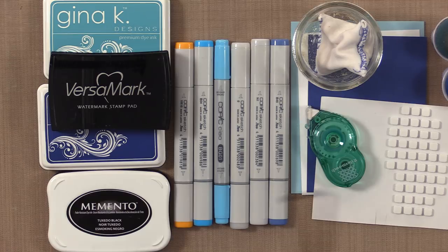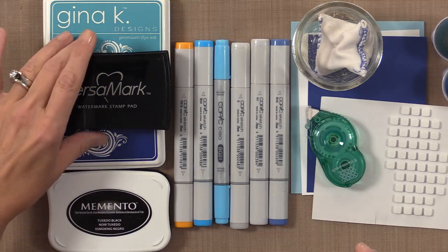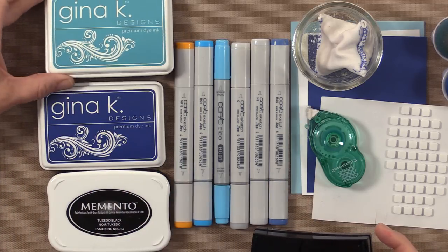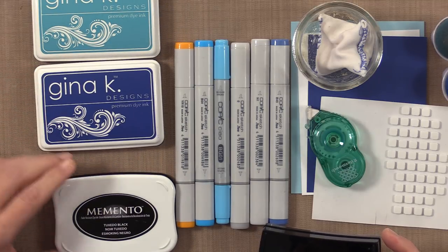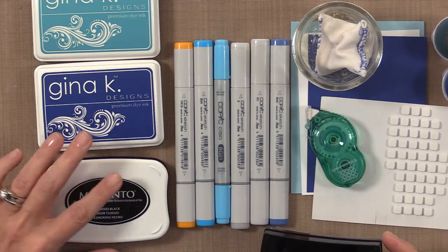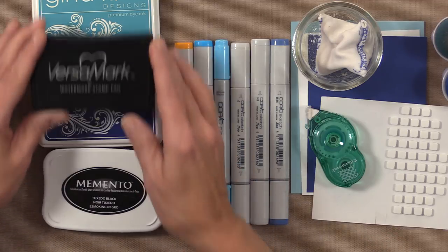Let me show you the tools and products you're going to need to make this card project. First you're going to need some ink, and the ink colors that I'm going to use are Gina K Designs Ocean Mist, Blue Denim, Memento Tuxedo Black, and Versamark.